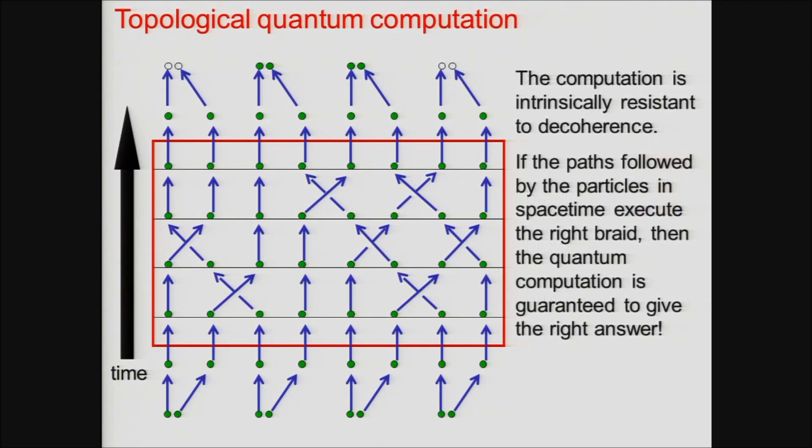Well what's beautiful about this idea is that the information that's being processed is very non-locally encoded and therefore protected from the damage that could be caused by decoherence. In principle as long as the braid traced out by the world lines of the particles is the right braid, we'll do the right computation and get the right result. Well, at least that's how it's supposed to work.